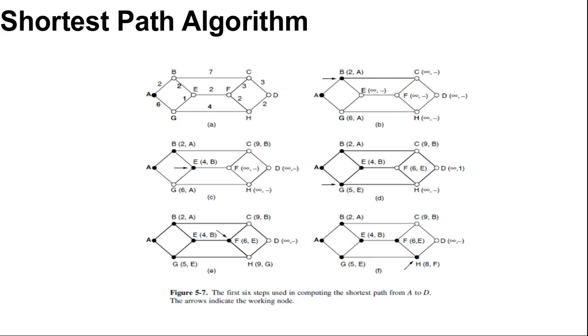Many other metrics besides hops and physical distance are also possible. For example, each edge could be labeled with the mean delay of a standard test packet. With this graph labeling, the shortest path is the fastest path rather than the path with the fewest edges or kilometers. By changing the weighting function, the algorithm would compute the shortest path measured according to any number of criteria or to a combination of criteria.